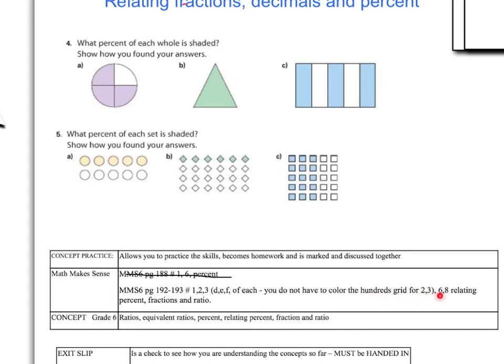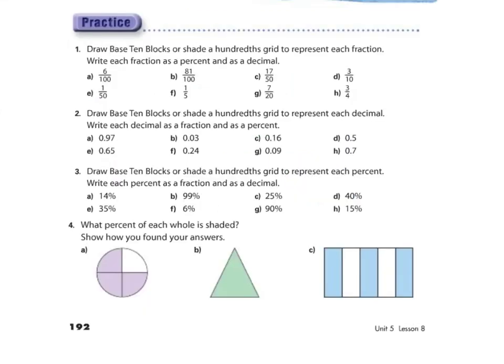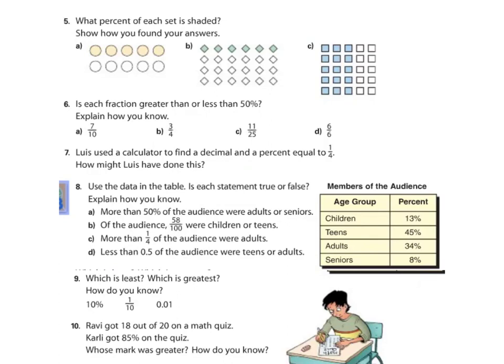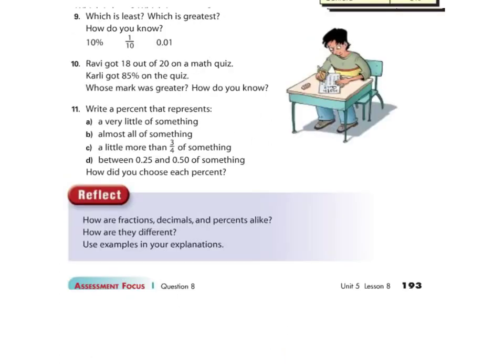And you do not have to color the 100s grid for 2 and 3. And then we are also doing questions 6 and 8. Of course, as you are working, if you have any questions, please ask either one of the aides in the classroom or myself or a class member that you feel comfortable asking. Again, for those of you that end up forgetting your textbook, here we have 5 to 10, 9 to 11, and the reflect section.